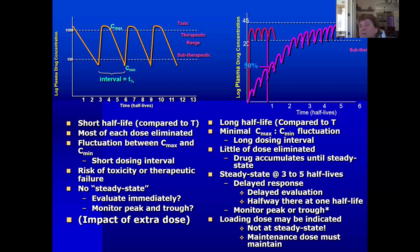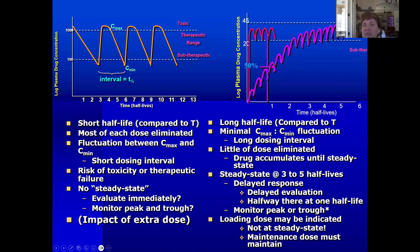I remind veterinarians that anytime they change the dosing regimen for a long half-life drug, they have to wait for a new steady state to occur. Bromide is a good example where sometimes we can't wait for steady state. For a patient that's cluster seizing where we want phenobarbital or zonisamide to act quickly, that's where we use therapeutic drug monitoring calculations to compute a loading dose intended to get us to therapeutic concentrations immediately. But you are not at steady state — you're at presumed steady-state concentrations, but won't be at true steady state until you've used the same dosing regimen for three to five half-lives.